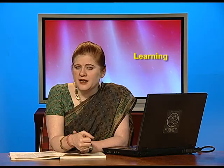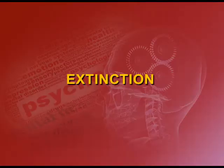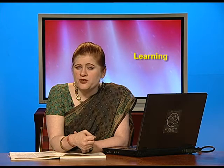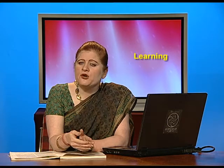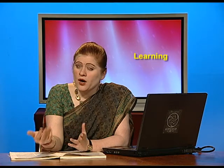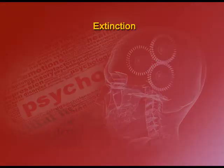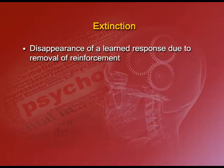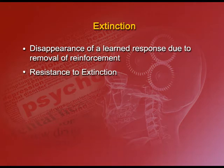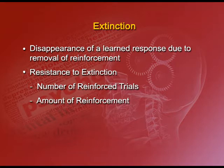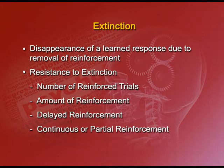The second key process in learning is extinction. As the name makes it clear, extinction involves the process where the reinforcement is extinguished, taken away, or stopped, and hence the response gets diminished. By definition, extinction is a disappearance of a learned response due to removal of reinforcement. In psychological experiments in labs, a concept of resistance to extinction has been observed, which is based on the number of reinforced trials, the amount of reinforcement being given, the delay in reinforcement, and also continuous or partial reinforcement schedules.